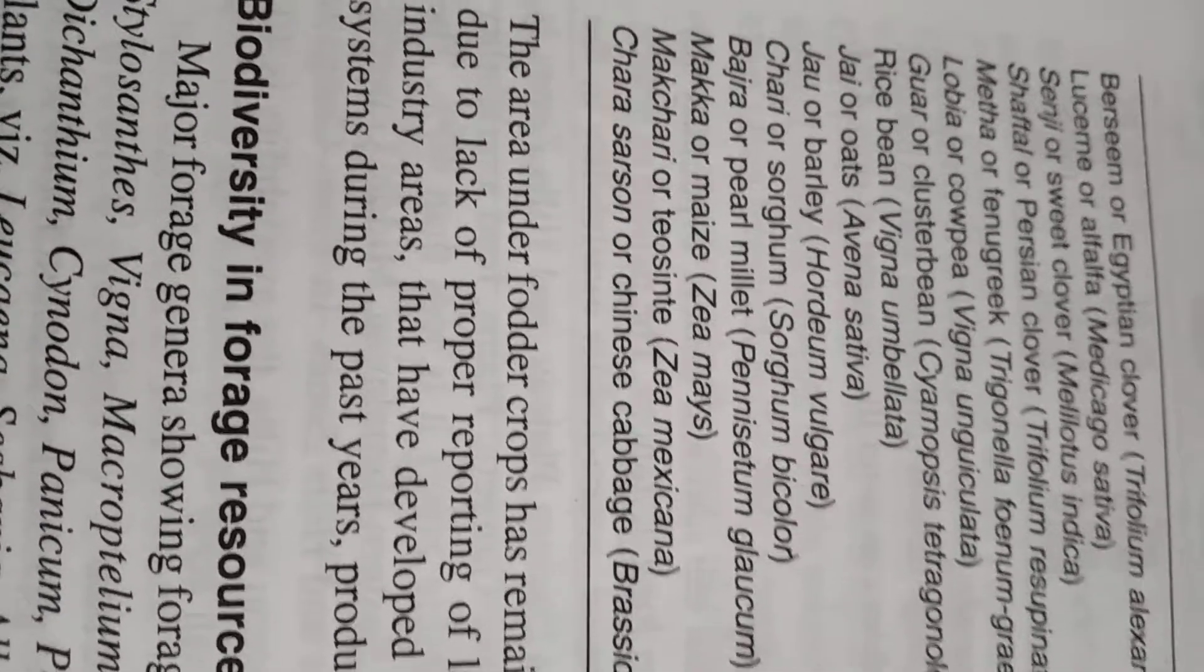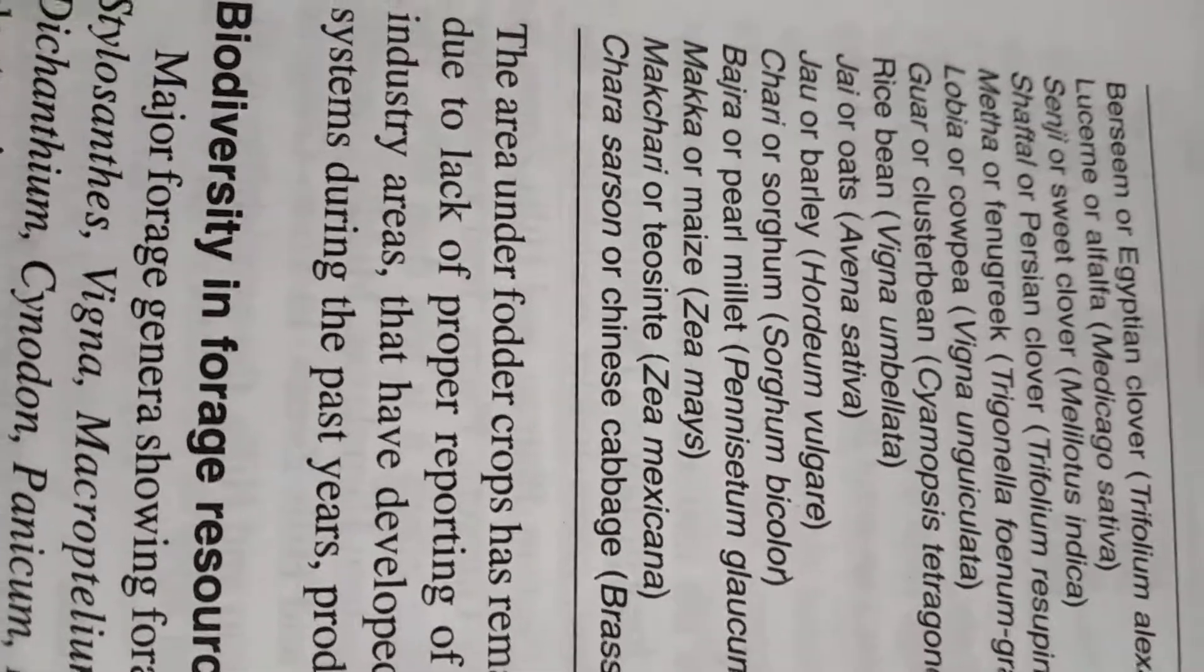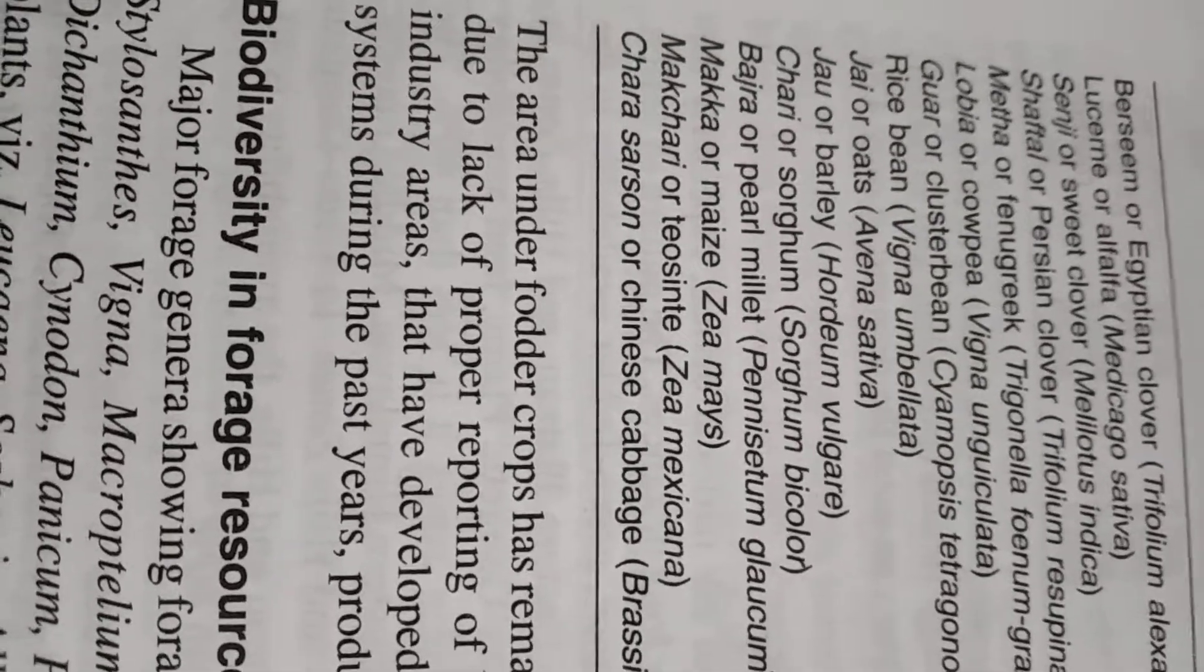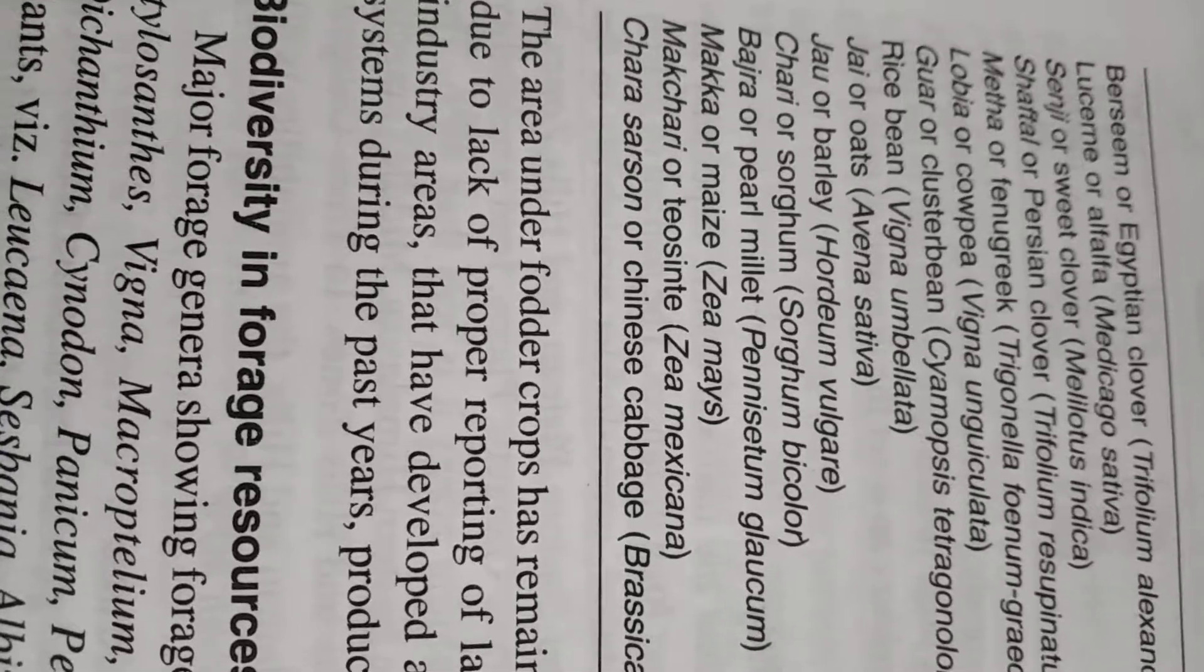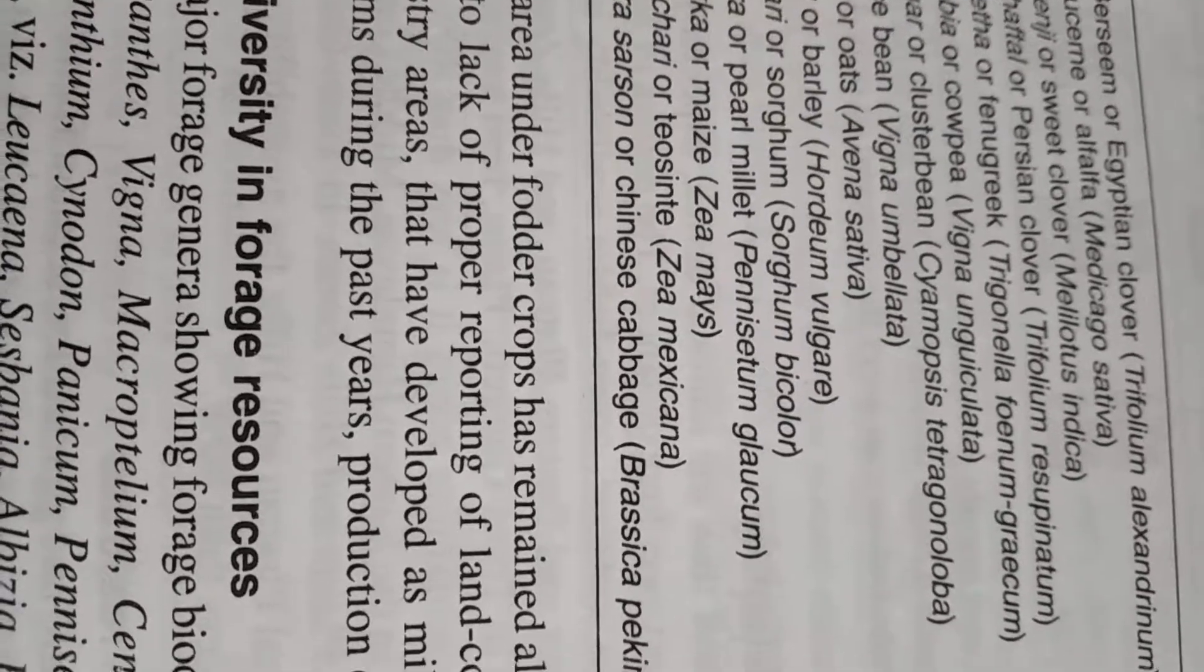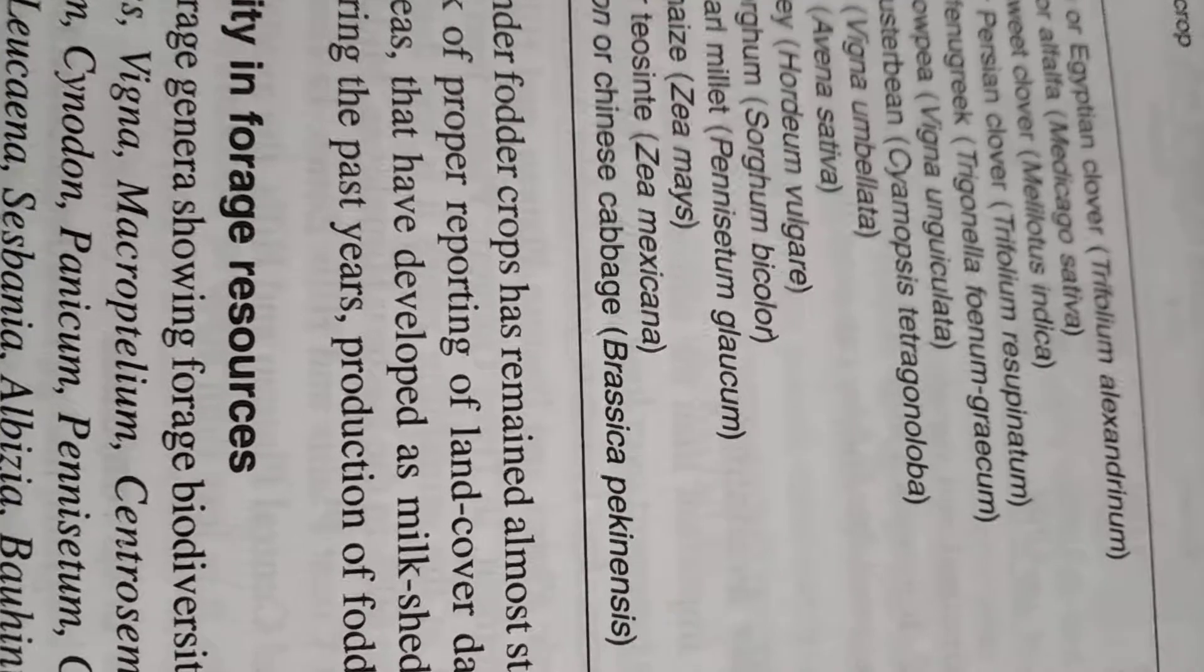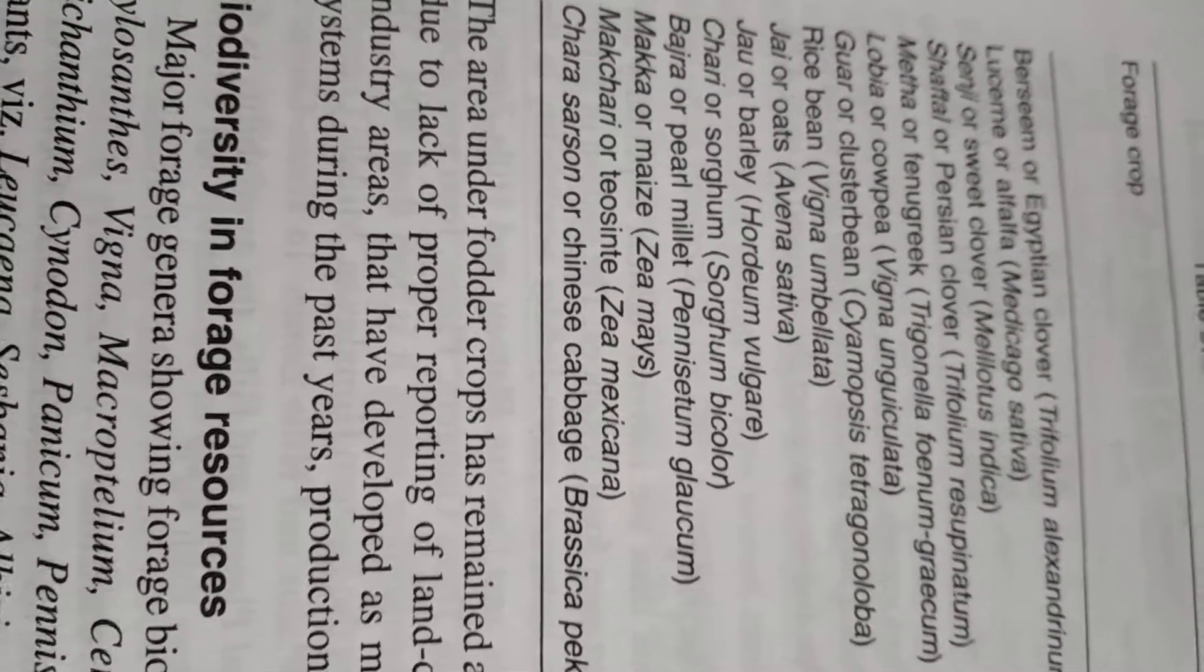Oat you remember, this is Avena sativa. Barley or jau is Hordeum vulgare. Chari or sorghum is Sorghum bicolor. Bajra or pearl millet is Pennisetum glaucum. Makka or maize is Zea mays. Makchari or teosinte which I asked in the question and it is the correct answer, Zea mexicana. And chara sarson or Chinese cabbage is Brassica pekinensis. This is your important forage crop. All these are important forage crops. Please remember them.